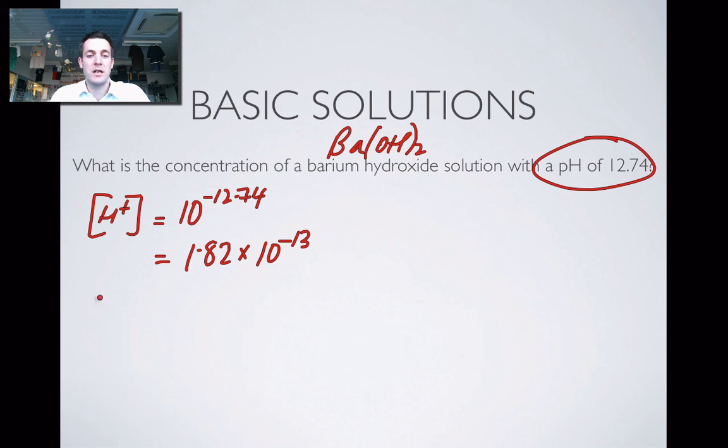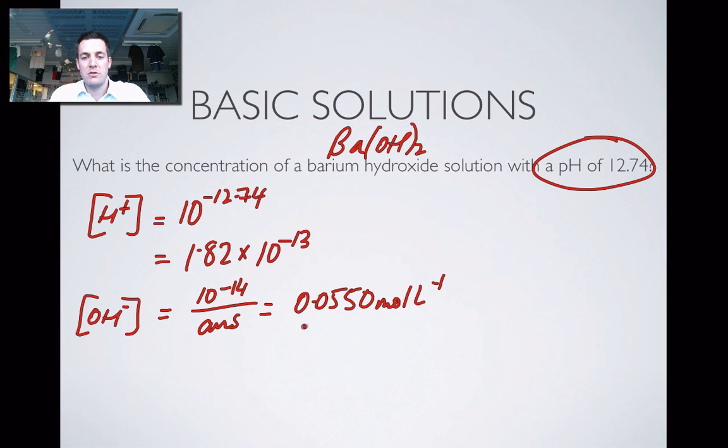Again using the expression for Kw, I can now find the concentration of OH- ions. I simply say it's 10 to the minus 14 over what I've just found, so the answer, and that equals 0.0550 moles per liter. I'm back in three significant figures here. That's not my final answer. Why is it not my final answer?